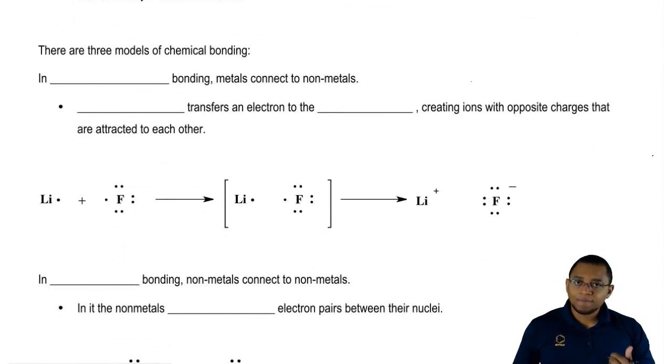We already know there are two types. We're going to say the first type is ionic bonding. We're going to say that's usually between a metal and nonmetals.